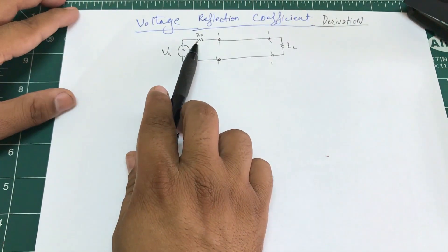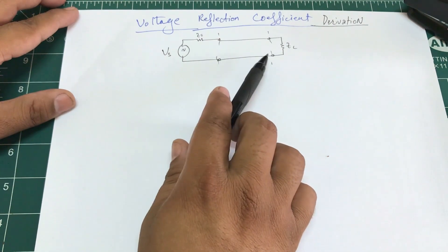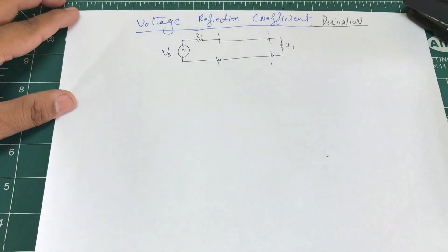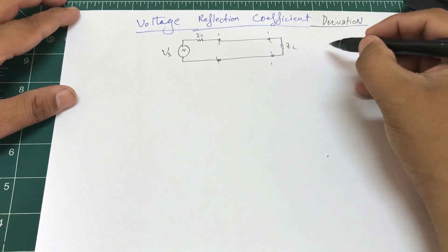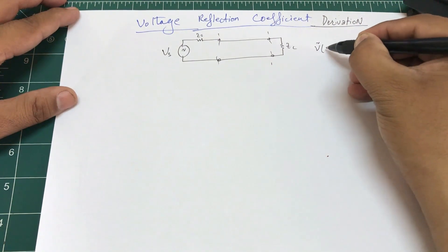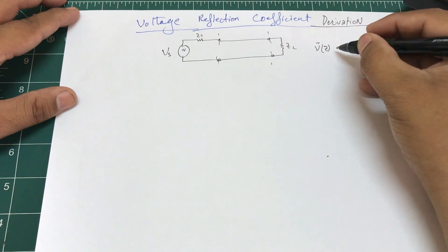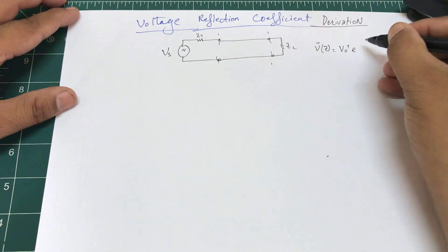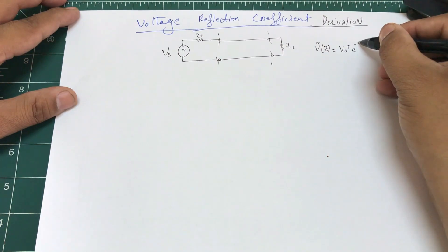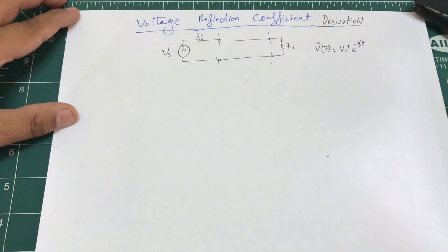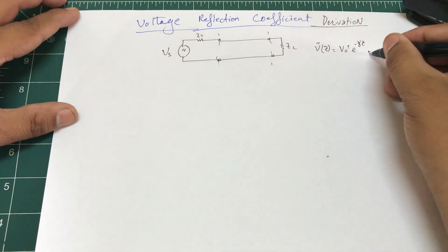We have our load, our source impedance, and our load impedance. This is the piece of wire connecting my source to my load. We're going to start off with the equations from last video: v(z) = V0+ * e^(-γz),